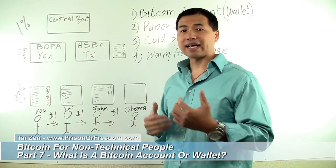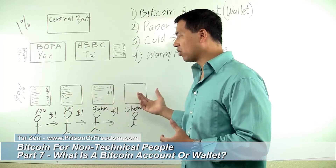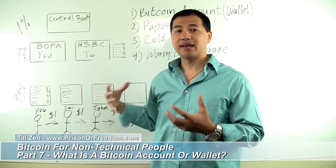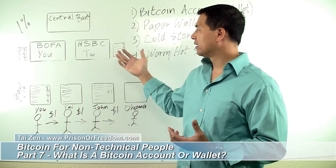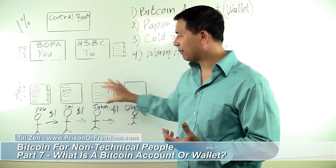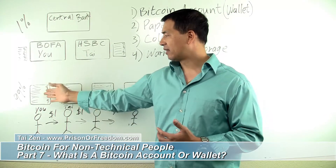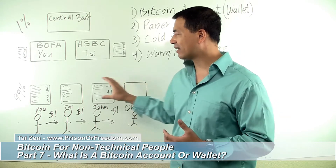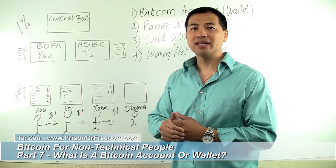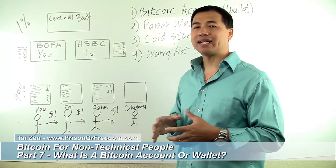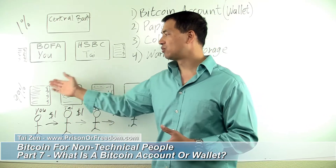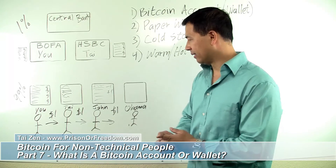And then in the second video, I talked about how the blockchain works, which is the public ledger that used to be private inside the banks. What Satoshi, the inventor of Bitcoin did, was take the ledger and make it public. That ledger is called a blockchain, and the blockchain is updated every 10 minutes. Every new block of data added to the blockchain contains all the transactions ever made in the Bitcoin world since 2009 when the Bitcoin system was released to the world by Satoshi.